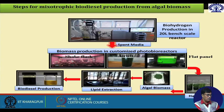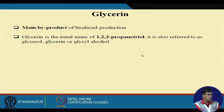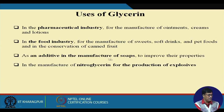Glycerin is the main byproduct of the biodiesel production process. Its uses include: in the pharmaceutical industry for manufacturing ointments, creams, and lotions; in the food industry for manufacturing sweets, soft drinks, and baked foods, and for conservation of canned fruits; as an additive for soap — different types of glycerin soaps are available in the market; and it is also used for the production of nitroglycerin for explosives.